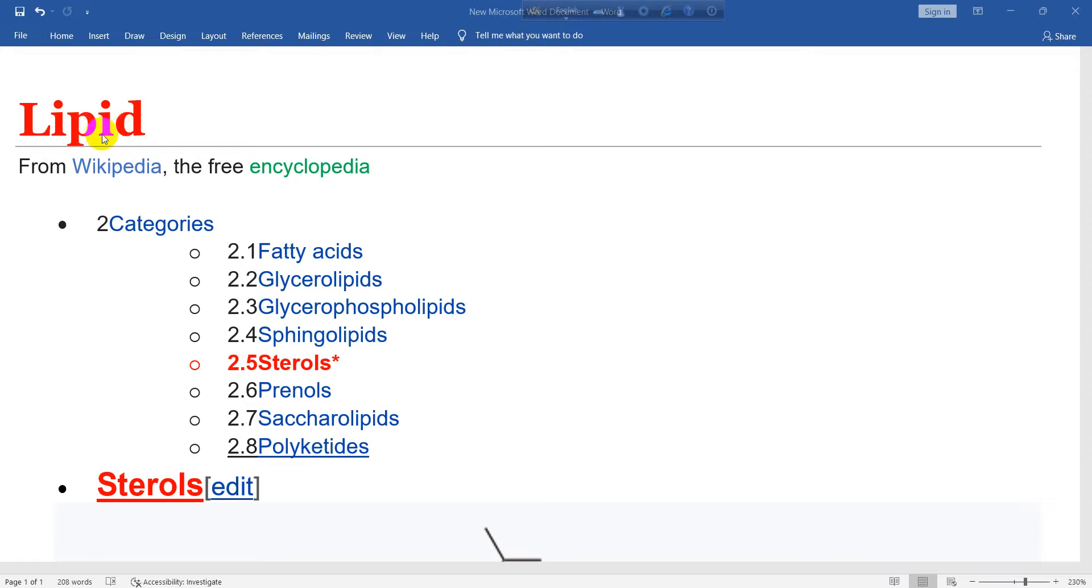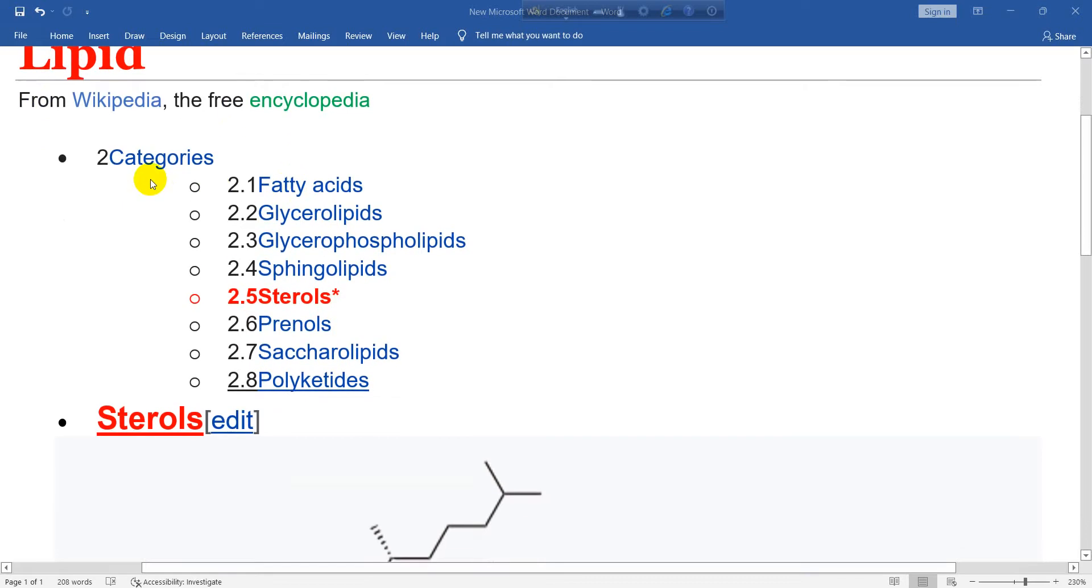In this lesson, we are going to talk about lipids from Wikipedia, the free encyclopedia. As we have already known, there are eight categories of lipids.